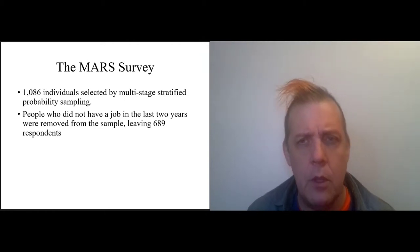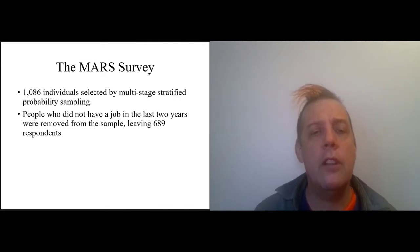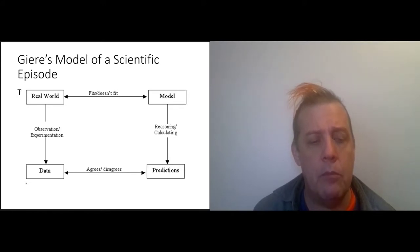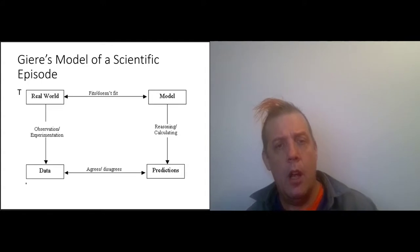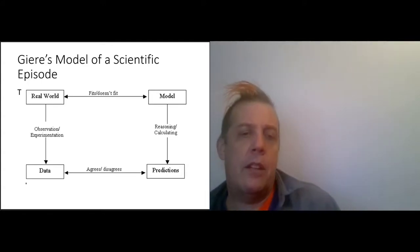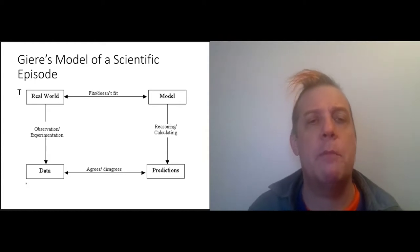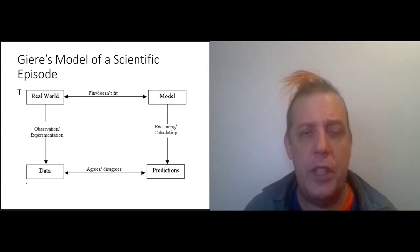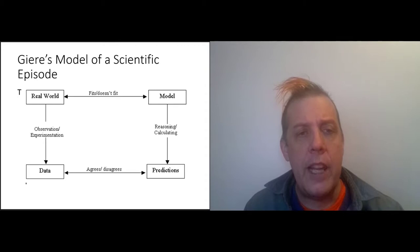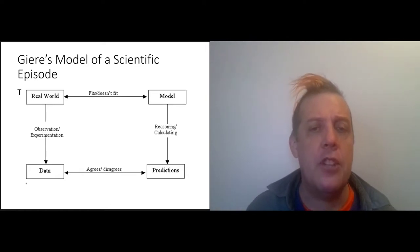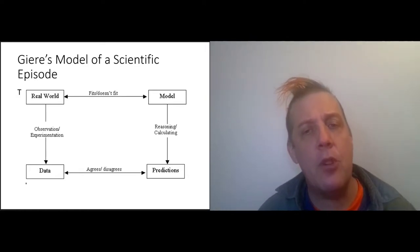All right, now let's circle around to looking at Giere's model of a scientific episode. This is taken from his book Understanding Scientific Reasoning. The big thing that he does with the semantic view of theories is try to understand the difference between the real world, which is real, and our representation of the real world, which is always simplified in some way. So we get four boxes: we have the real world, and then we interact with that in some way to get data. That's all on the side of reality. On the side of our representation, we have a model and predictions based on that model.